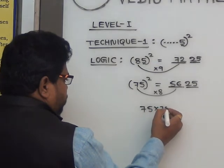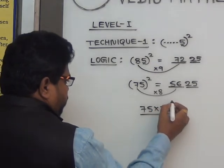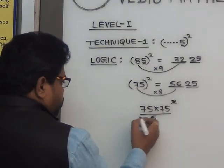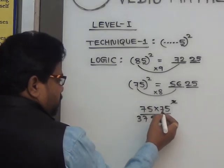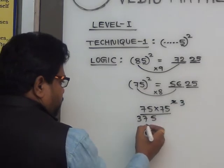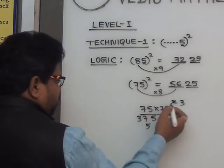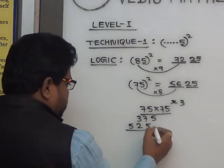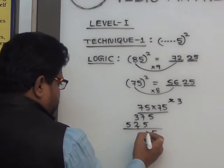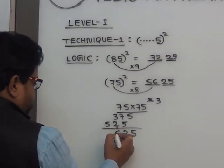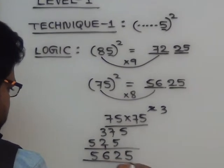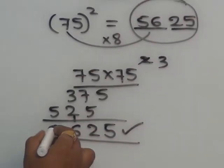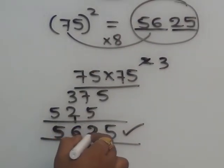75 into 75. Last two digits 25. So the answer is 5625. Yekadha same answer 5625. Yela kundha value — same chayali.